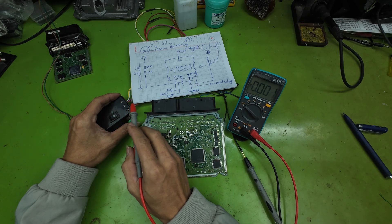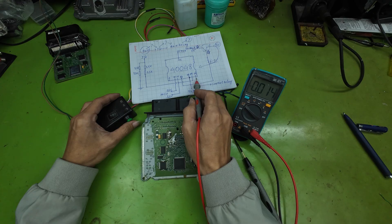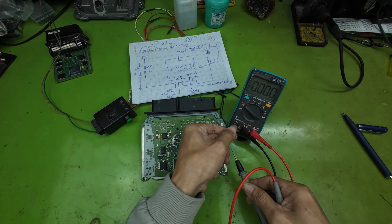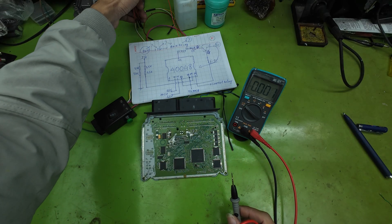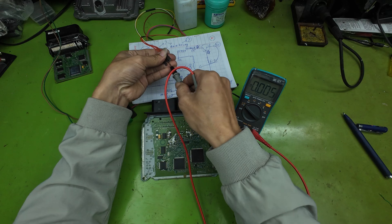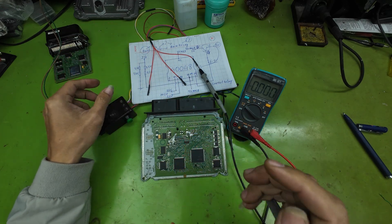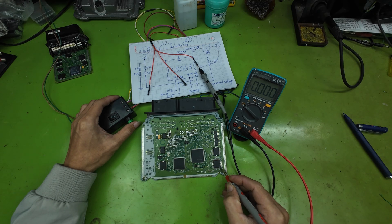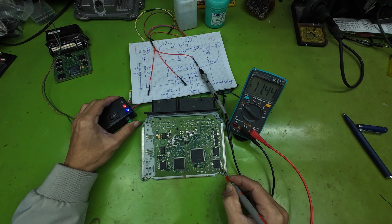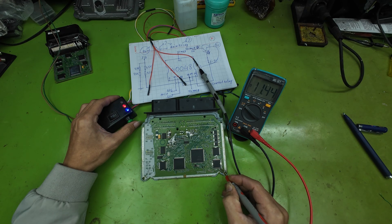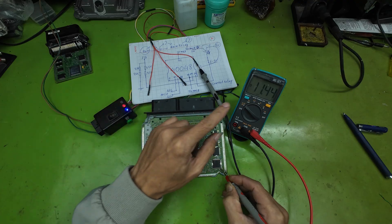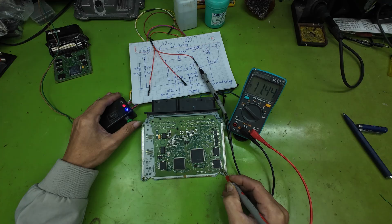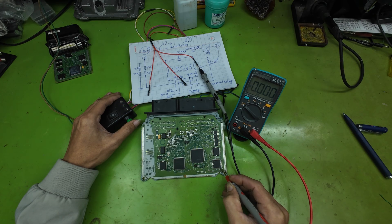Next, I will measure the main relay control signal. Since this is a ground-side control signal, we need to place the meter probe on B+. As you can see, we have approximately minus 11 volts as the control signal for the main relay. This means that the IG power and the relay control signal are both working correctly.